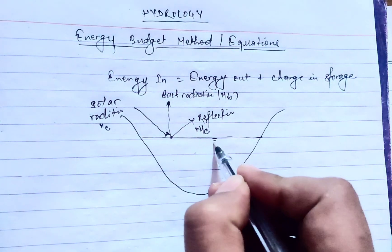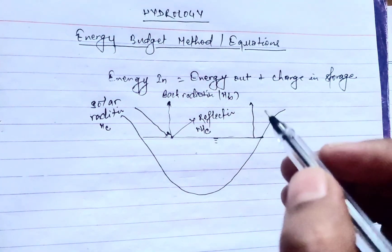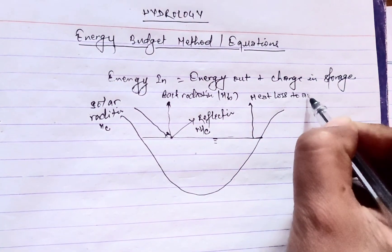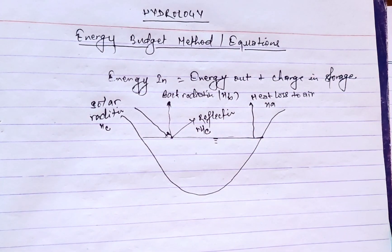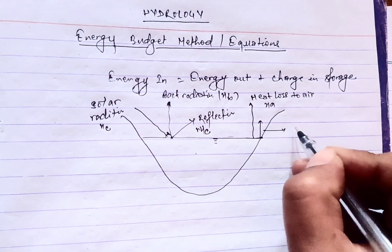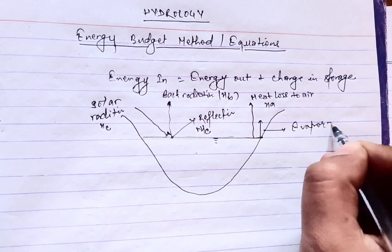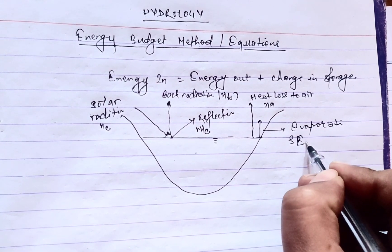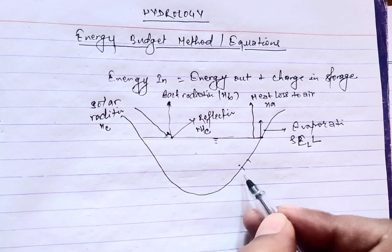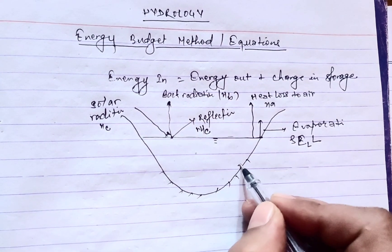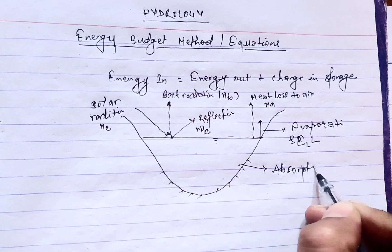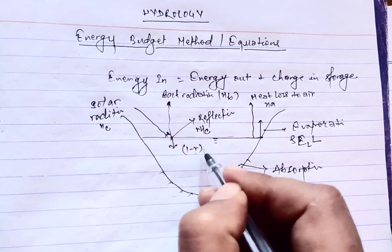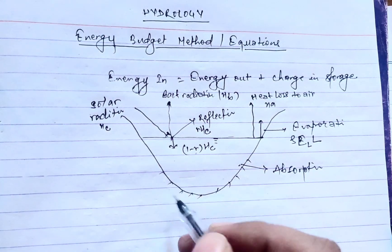At the water level, certain water gets lost due to heat loss to air given as Ha, and evaporation also occurs which is given as He. The amount of water can be absorbed by the ground surface as absorption. The entrance of water is given as (1-r) times Hc, and water is stored.